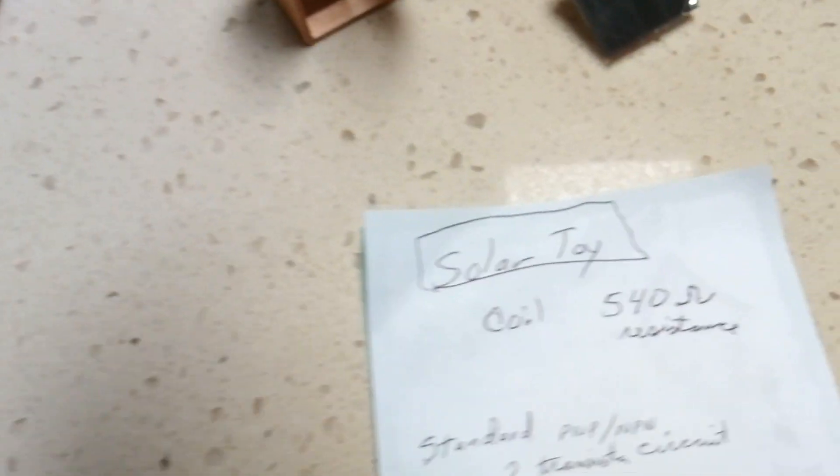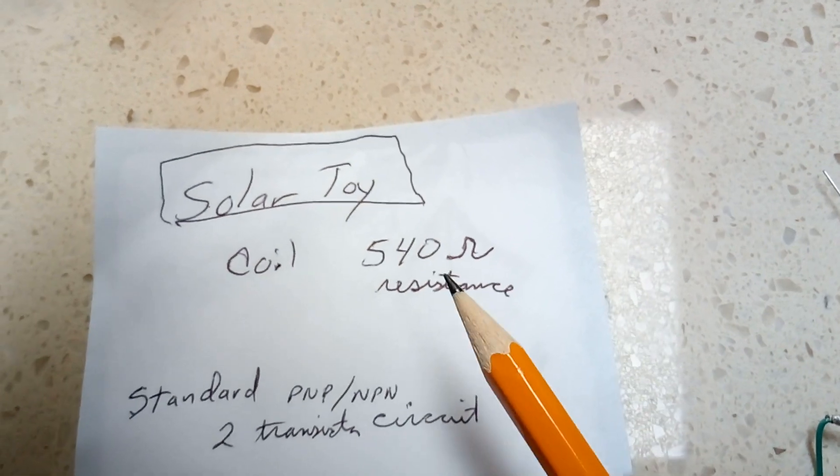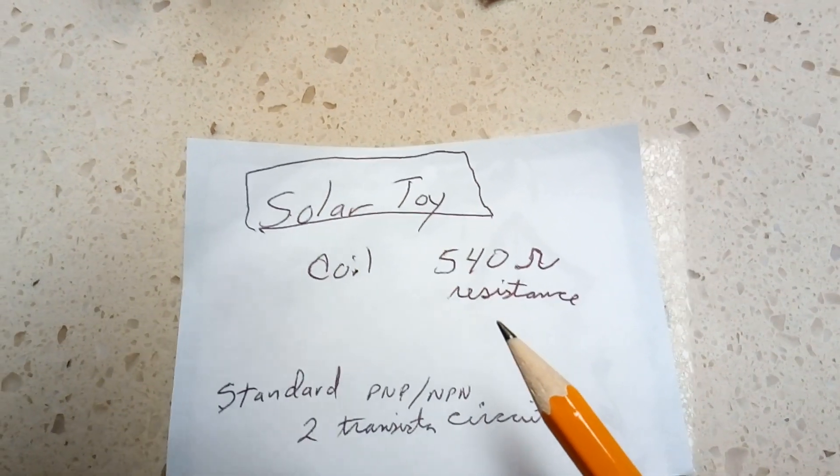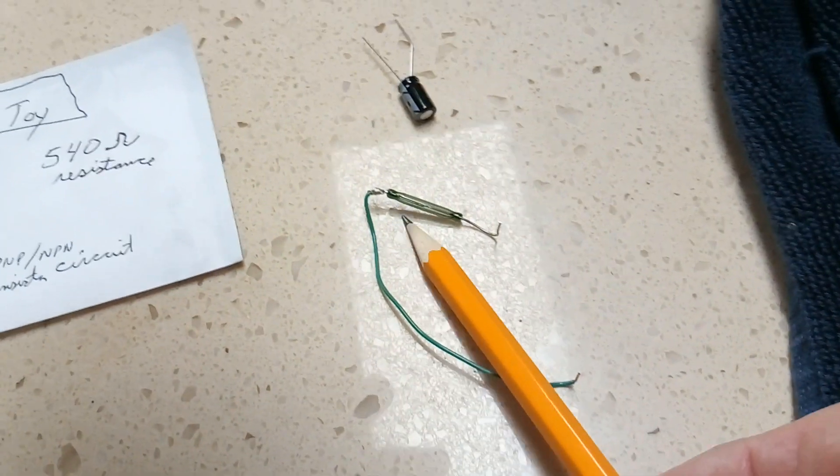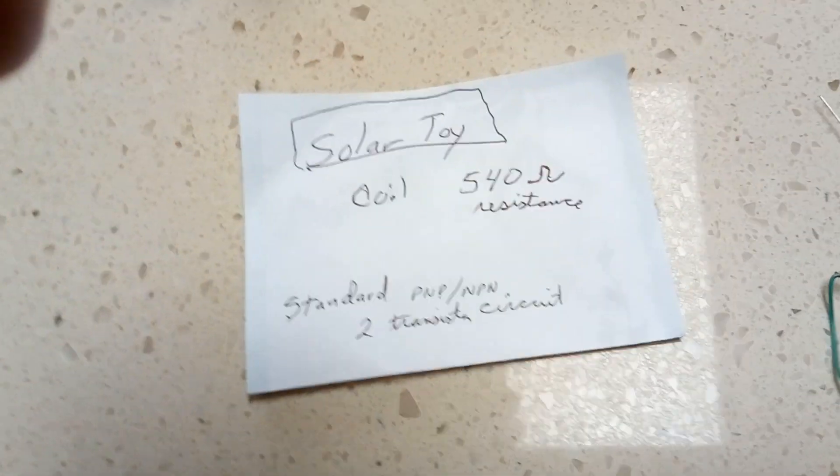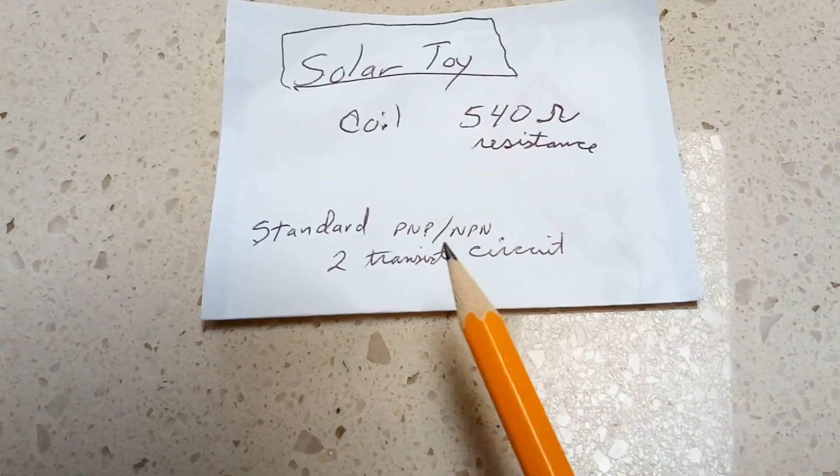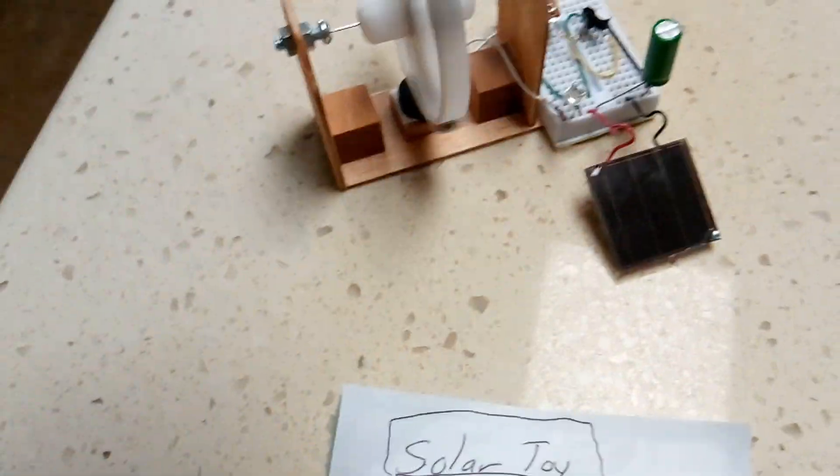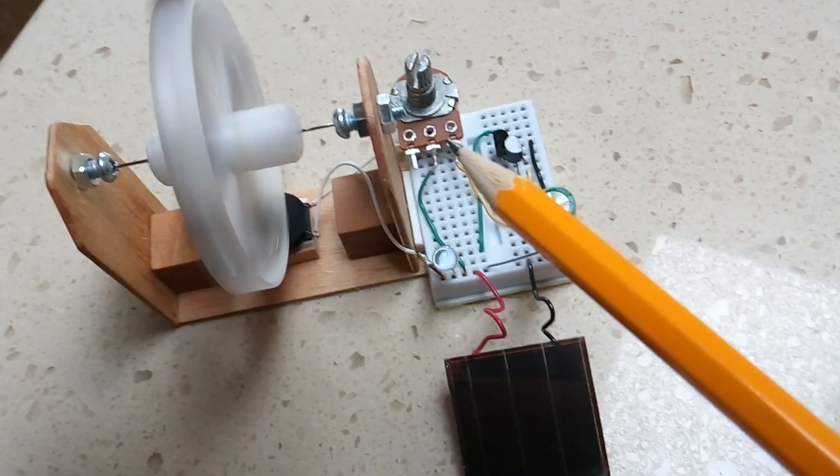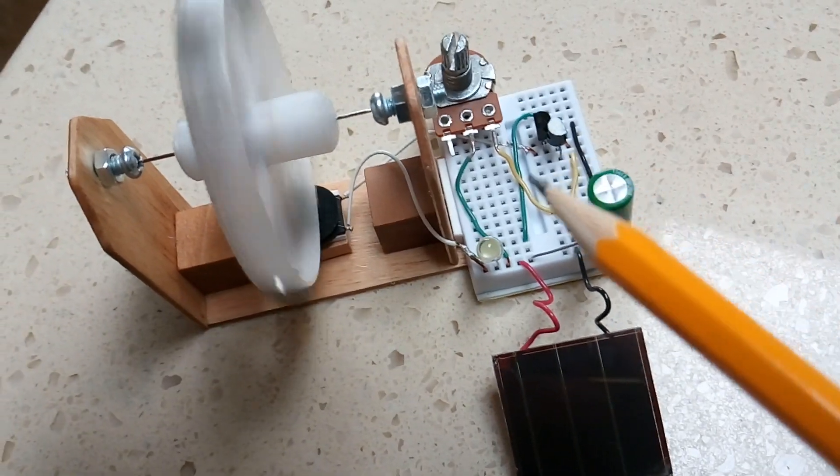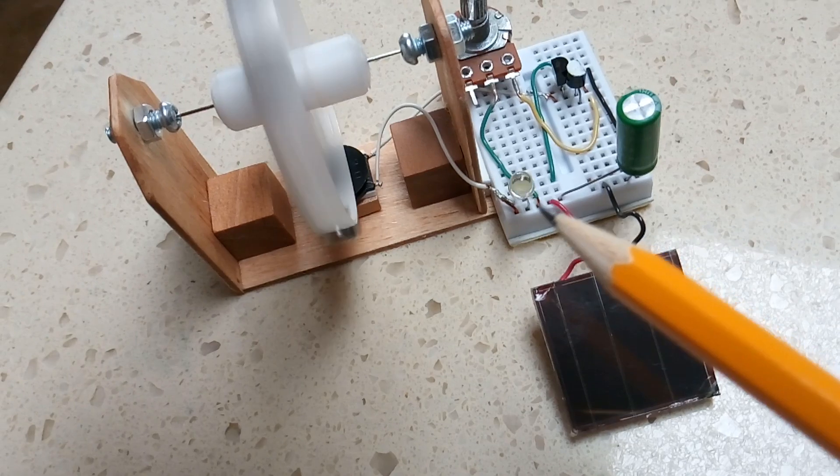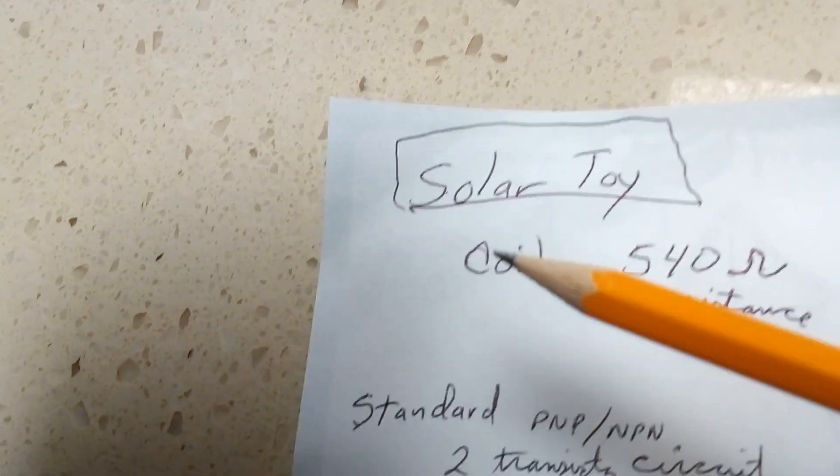I initially started running it on just a reed switch, and then I switched over today to the standard PNP-NPN two-transistor driver circuit that uses just a one-meg potentiometer as the only other component besides the two transistors. The LED is placed across the coil, which is 540 ohms, and you get a flash out of it when the field collapses.